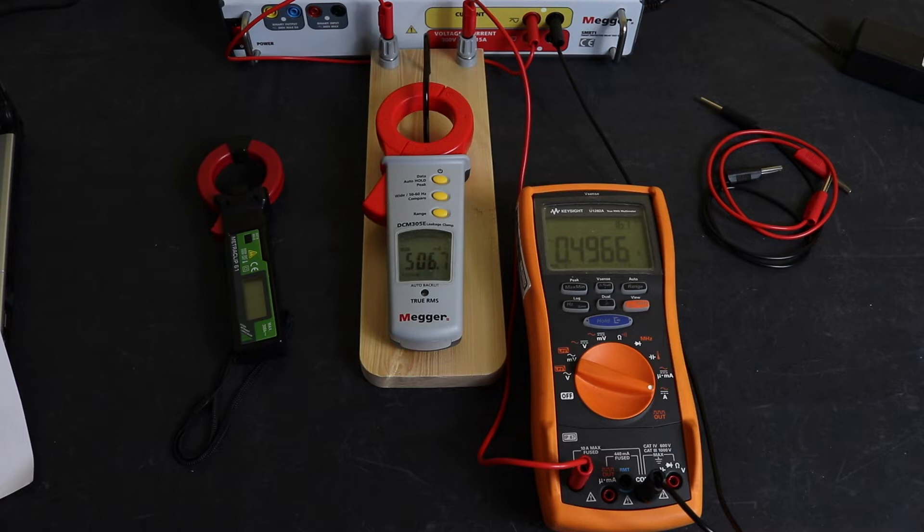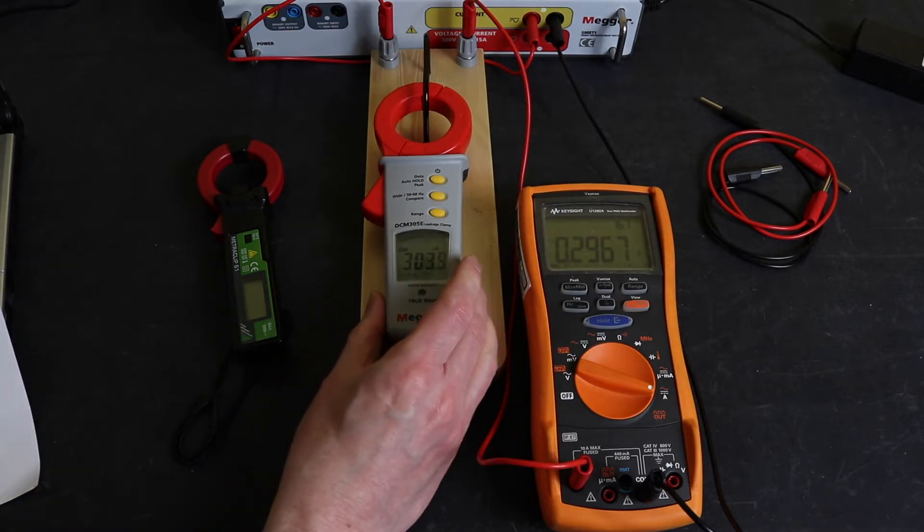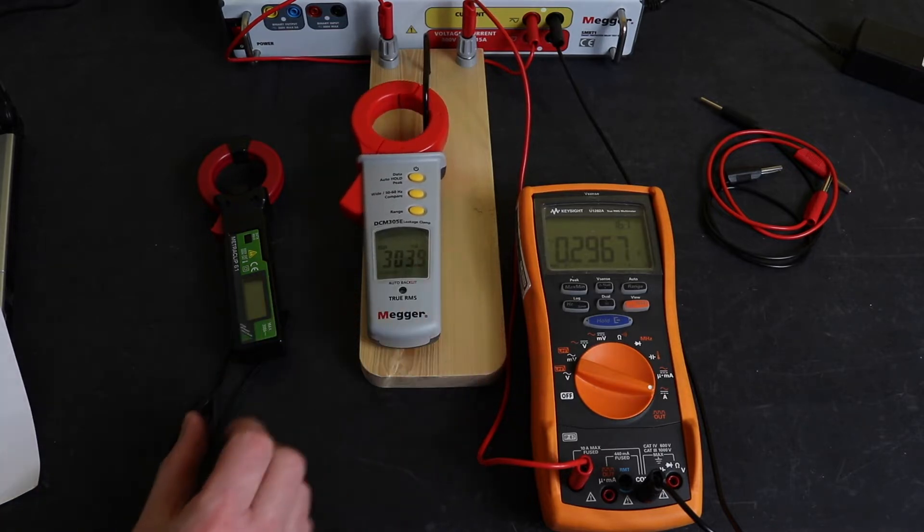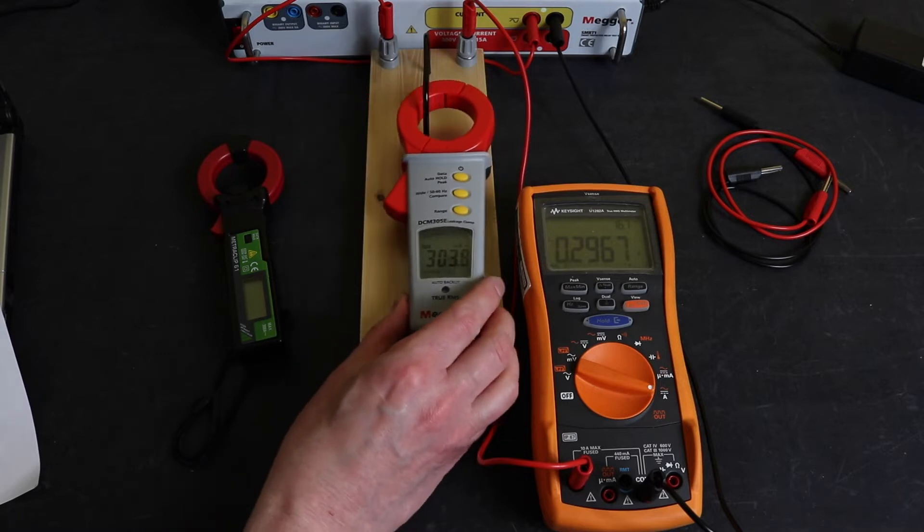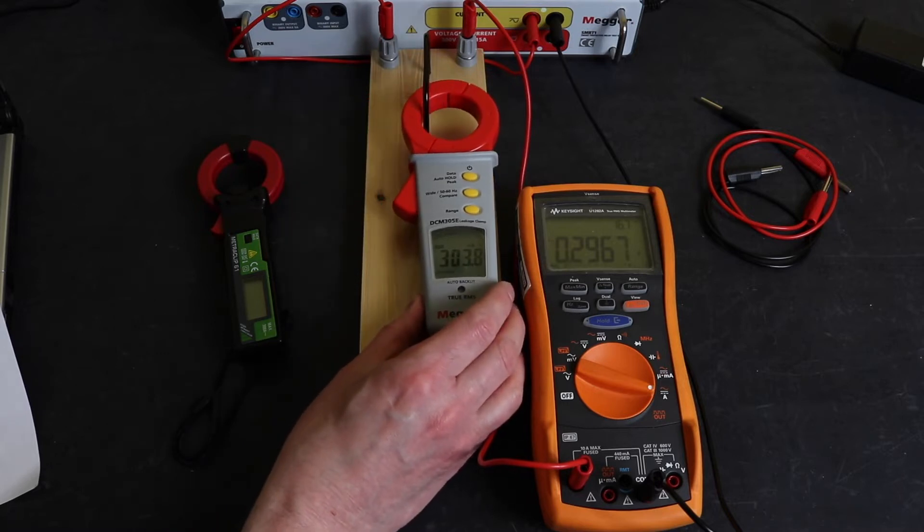Let's just drop down to 300 milliamps and see what that gets us. 303.8 and that's 296.7. Let's just move our clamp about. No difference there, no difference.